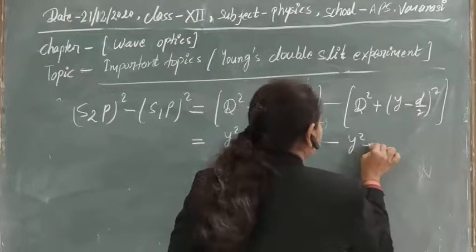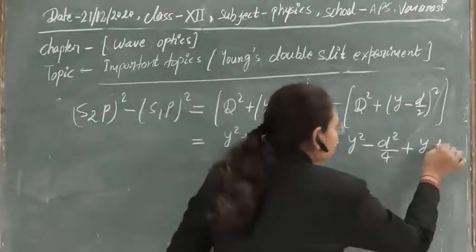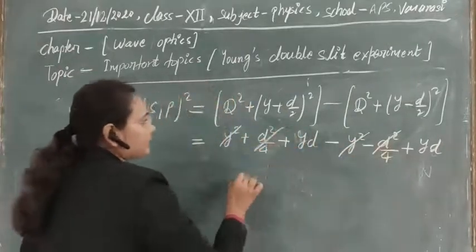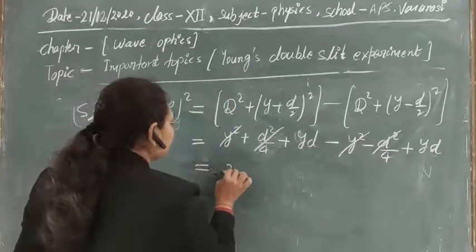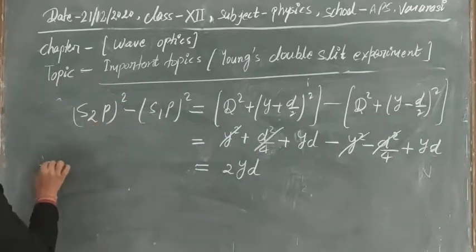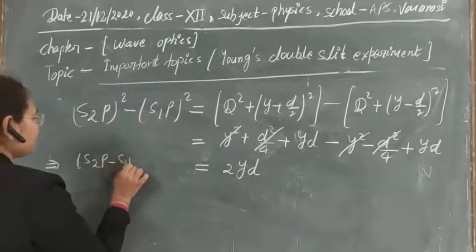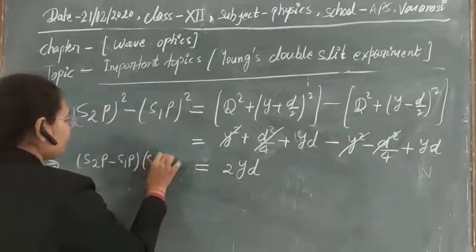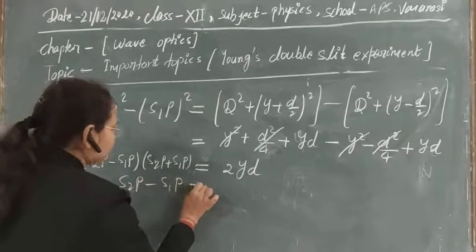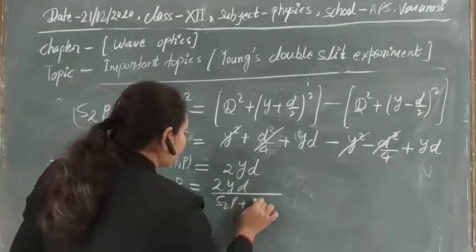So S2P² − S1P² = 2yD. We can also factor the left side using the difference of squares: (S2P − S1P)(S2P + S1P) = 2yD. Therefore, S2P − S1P = 2yD / (S2P + S1P). In the diagram, S2P + S1P is approximately equal to 2D, the distance to the screen. Substituting this gives path difference = 2yD / 2D = yD/d — wait, actually = yd/D after the correct substitution.